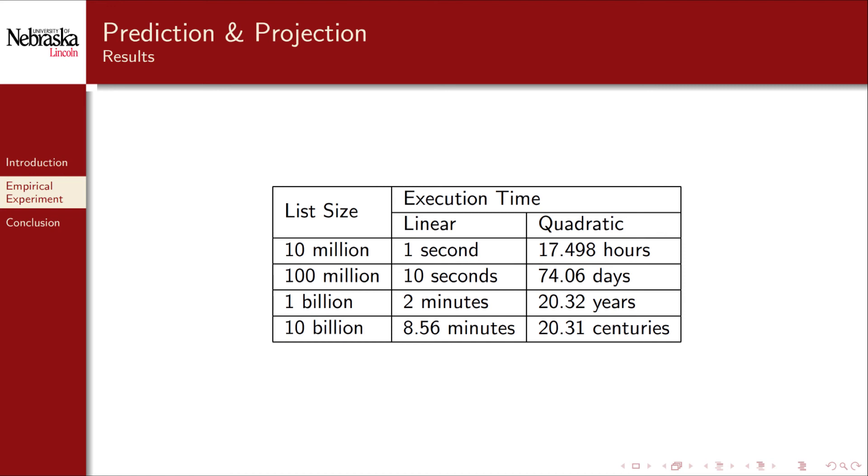By no means are these list sizes unreasonable. In today's world of big data, they should be considered normal if not small in fact. However, the performance is clearly not even comparable. Computation on the order of eight minutes is slow but reasonable. There's no scenario in which centuries of computation time is reasonable or acceptable.